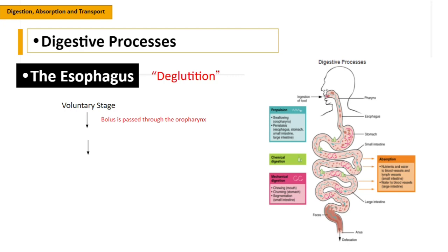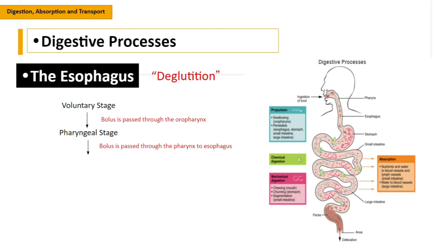Please take note that the nasopharynx is not part of the digestive process — it is only involved in respiration. However, the oropharynx and laryngopharynx are involved in our digestive process. The second stage of deglutition is the pharyngeal stage, wherein the bolus is passed through the pharynx to the esophagus. The third is the esophageal stage, wherein the bolus is passed through the esophagus down to the stomach.